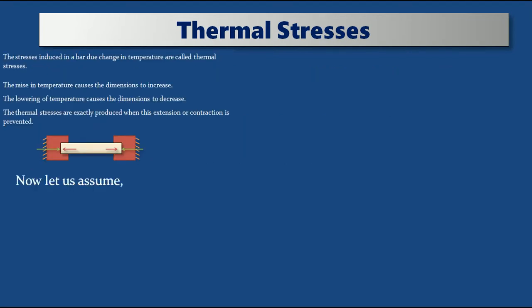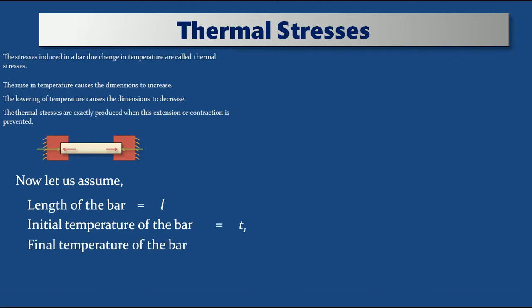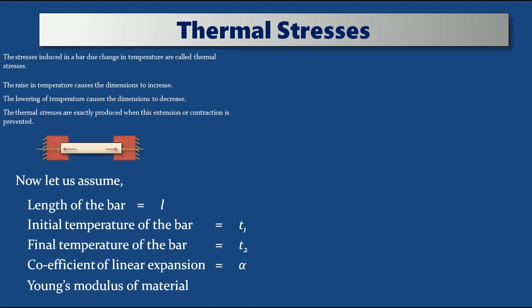First we write the formula. Before that we need to assume some elements: the length of the bar as L, the initial temperature of the bar as T1, and the final temperature after increasing or decreasing as T2. Every material has a particular coefficient of expansion value — different materials can have different coefficient of linear expansion values, that is alpha. And the Young's modulus of the given material as E.